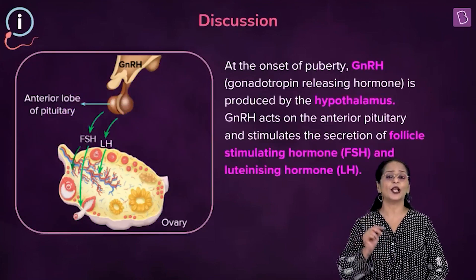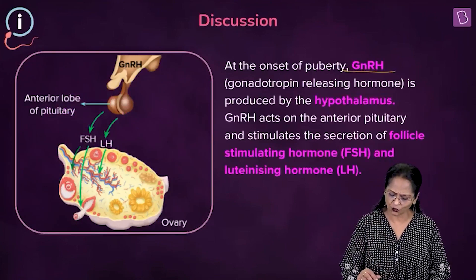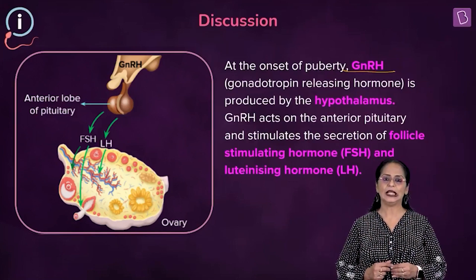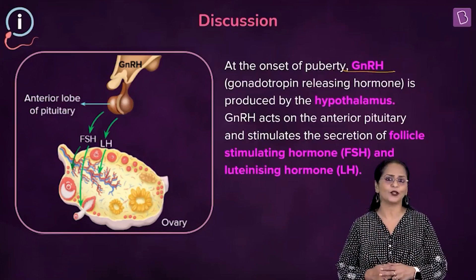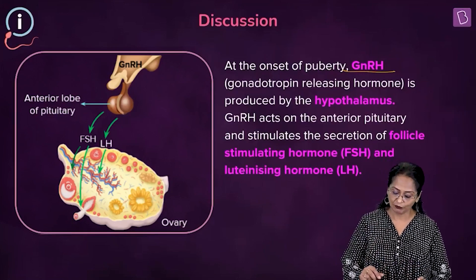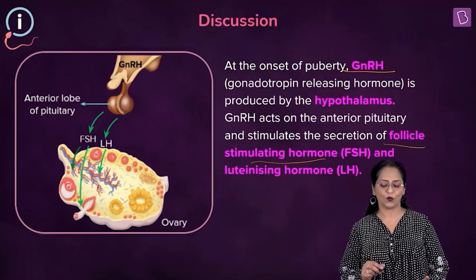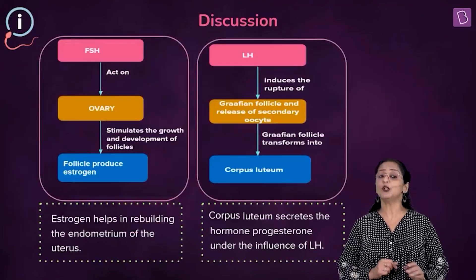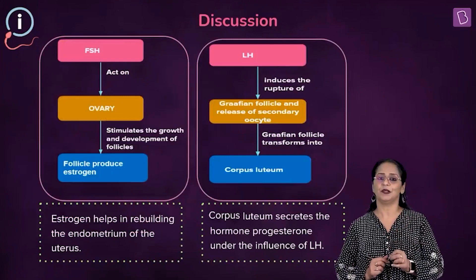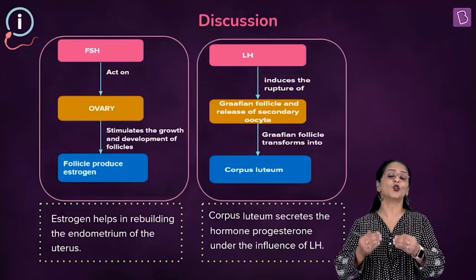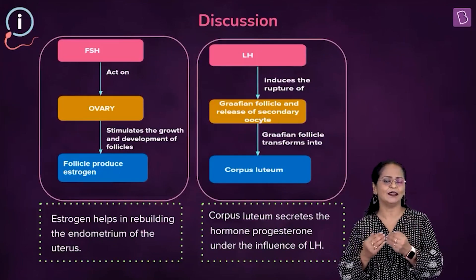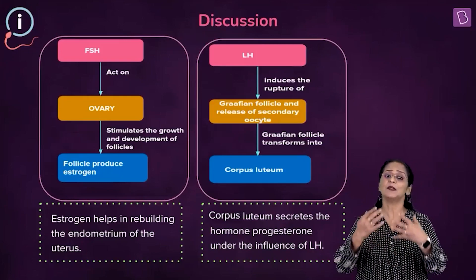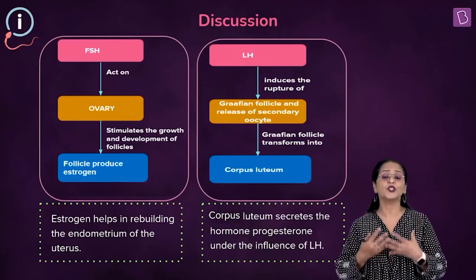The hypothalamus secretes the gonadotropin-releasing hormone, in short called GnRH. This acts upon the anterior pituitary gland and stimulates it to secrete two gonadotropins: the follicle-stimulating hormone or FSH, and the luteinizing hormone or LH. FSH helps in the development of the follicle lining in the ovary — the maturation of the follicles.